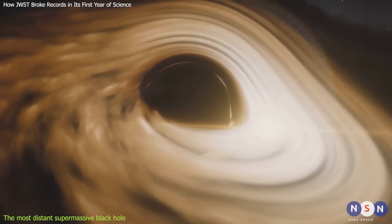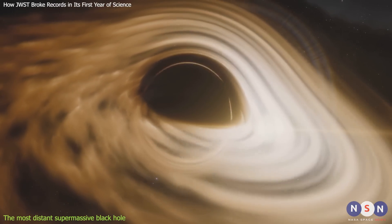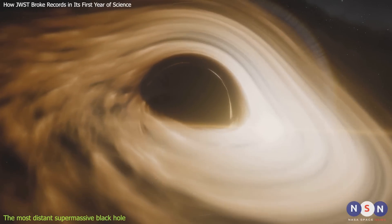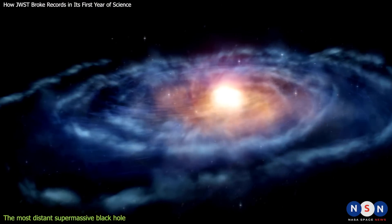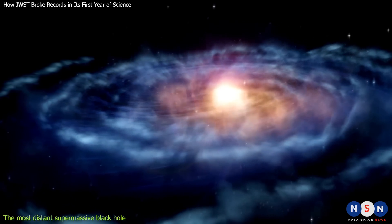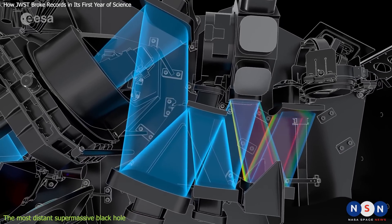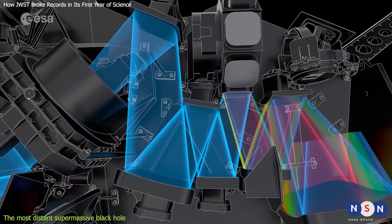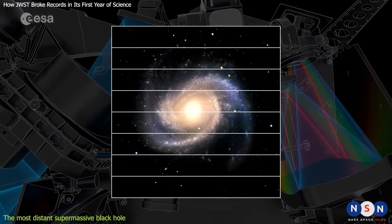The black hole has a mass of about 1.4 billion times that of our sun, making it one of the most massive black holes known at any epoch. It is also extremely bright, emitting more than a thousand times the energy of our entire galaxy. The astronomers used JWST's near-infrared camera, NIRCam, and near-infrared spectrograph, NIRSpec, to observe the galaxy and measure its distance and properties.